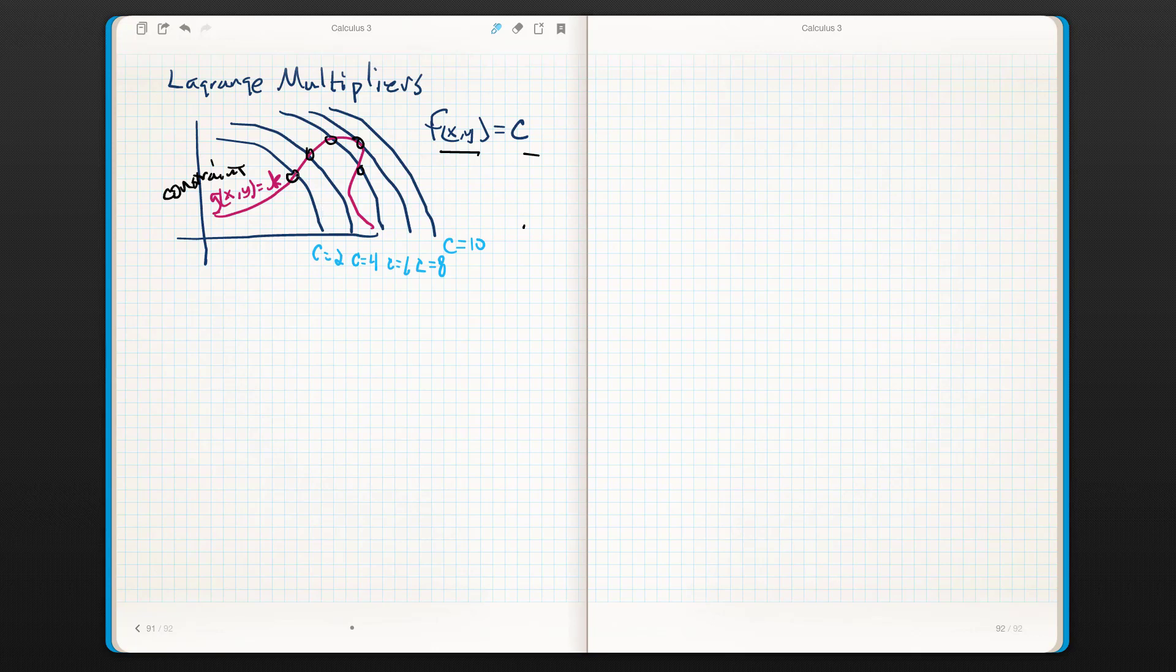Clearly, this intersection is not a candidate for optimization. Why? Because only the function is continuing to increase. So there's no way that I'm going to have a maximum for c equals 2. Likewise, not at c equals 4, not at c equals 6. Ah, now we've got something going on here, don't we?